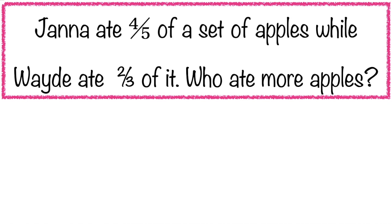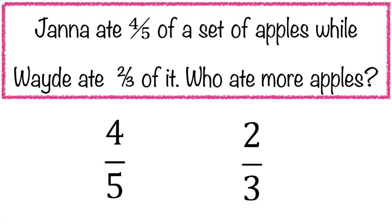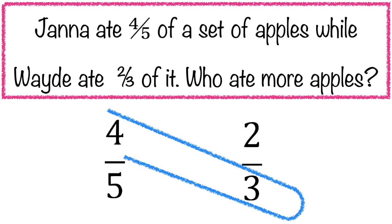In order to solve this, let's write first the given fractions. For Janna, we have 4 fifths, and for Wade, we have 2 thirds. In comparing similar fractions, the first thing we need to do is to multiply the numerator of the first fraction by the denominator of the second fraction. We have 3 times 4, that is equal to 12.